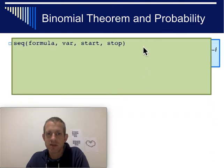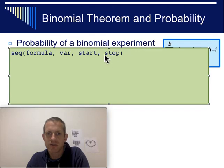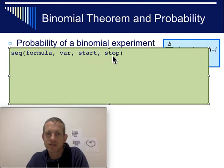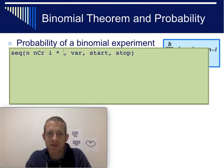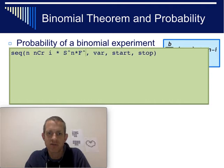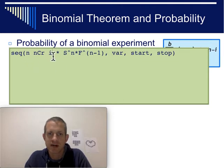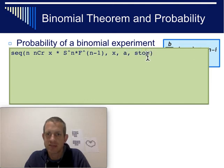If you need to type up a large problem, you can use the calculator's sequence tool. The sequence command takes a formula, your variable of interest, and the start and stop values. The formula will be something like N choose X — NCR — multiplied by the success variable raised to X, times the failure variable raised to N minus X, going from A to B. We'll do an actual example with numbers in a moment.